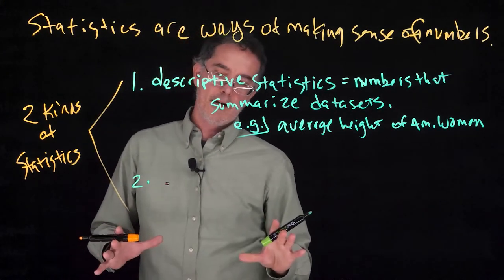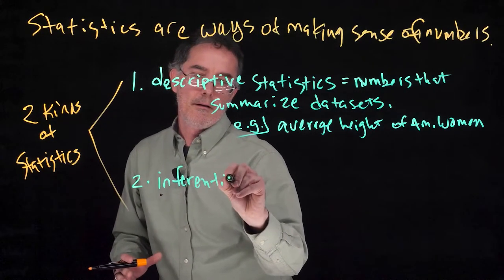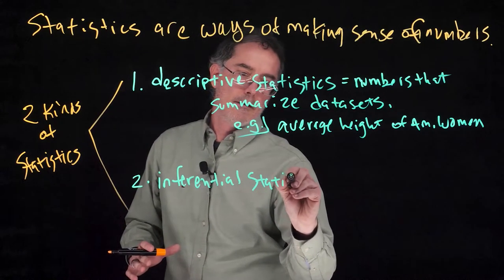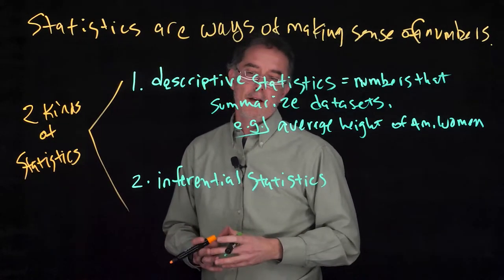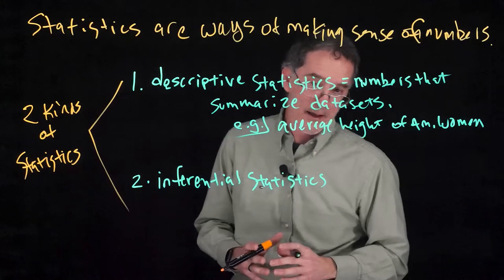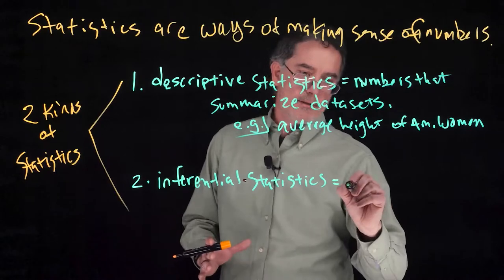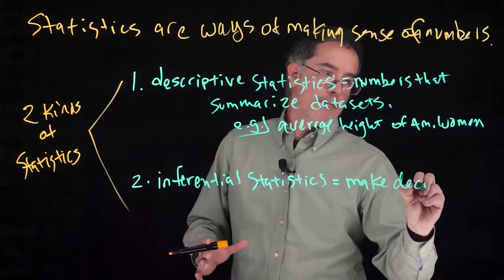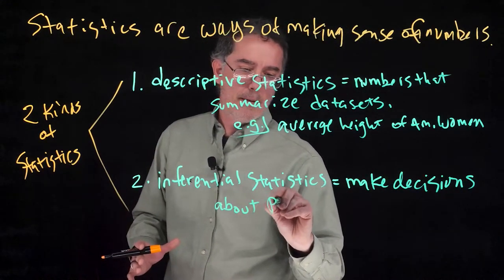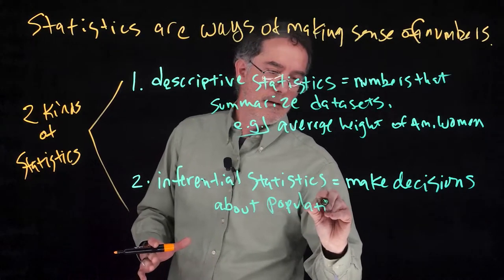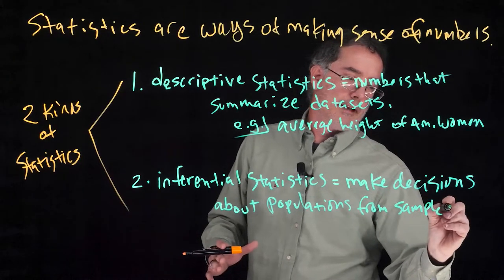The other main kind of statistic is called inferential statistics. These are mathematical procedures that people have figured out that allow researchers to make decisions or inferences about populations based on sample data.